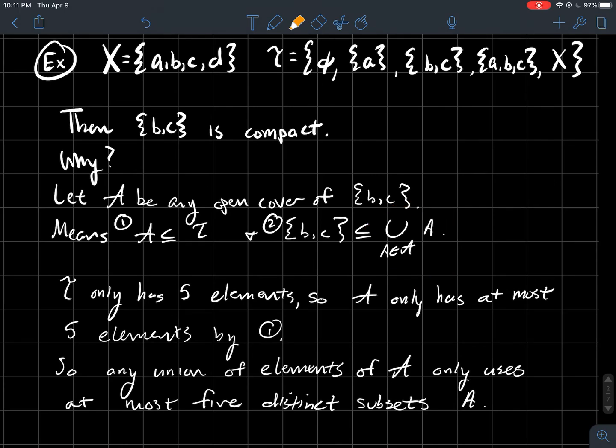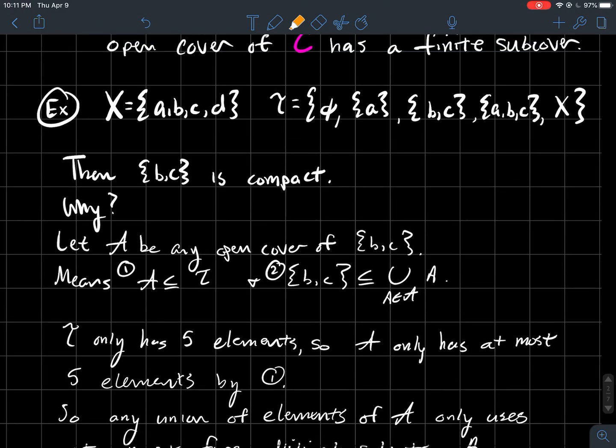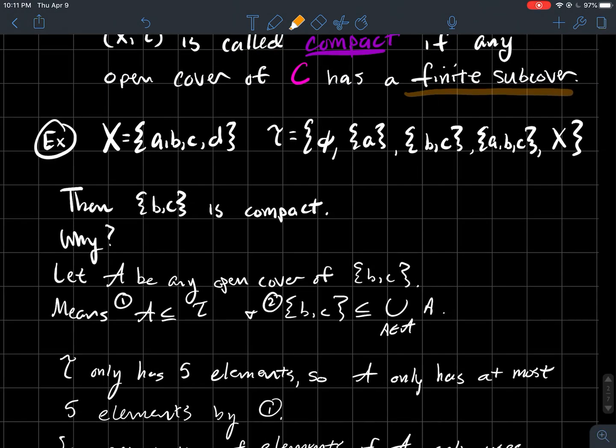So it's not possible for me to have a union of infinitely many different sets. At the end of the day, I'm only taking the union of at most five different things. And that's what we mean. That's this finite business here. Can you reduce that union so that you're only taking the union of finitely many things at a time? That is how to translate this idea of a finite subcover.